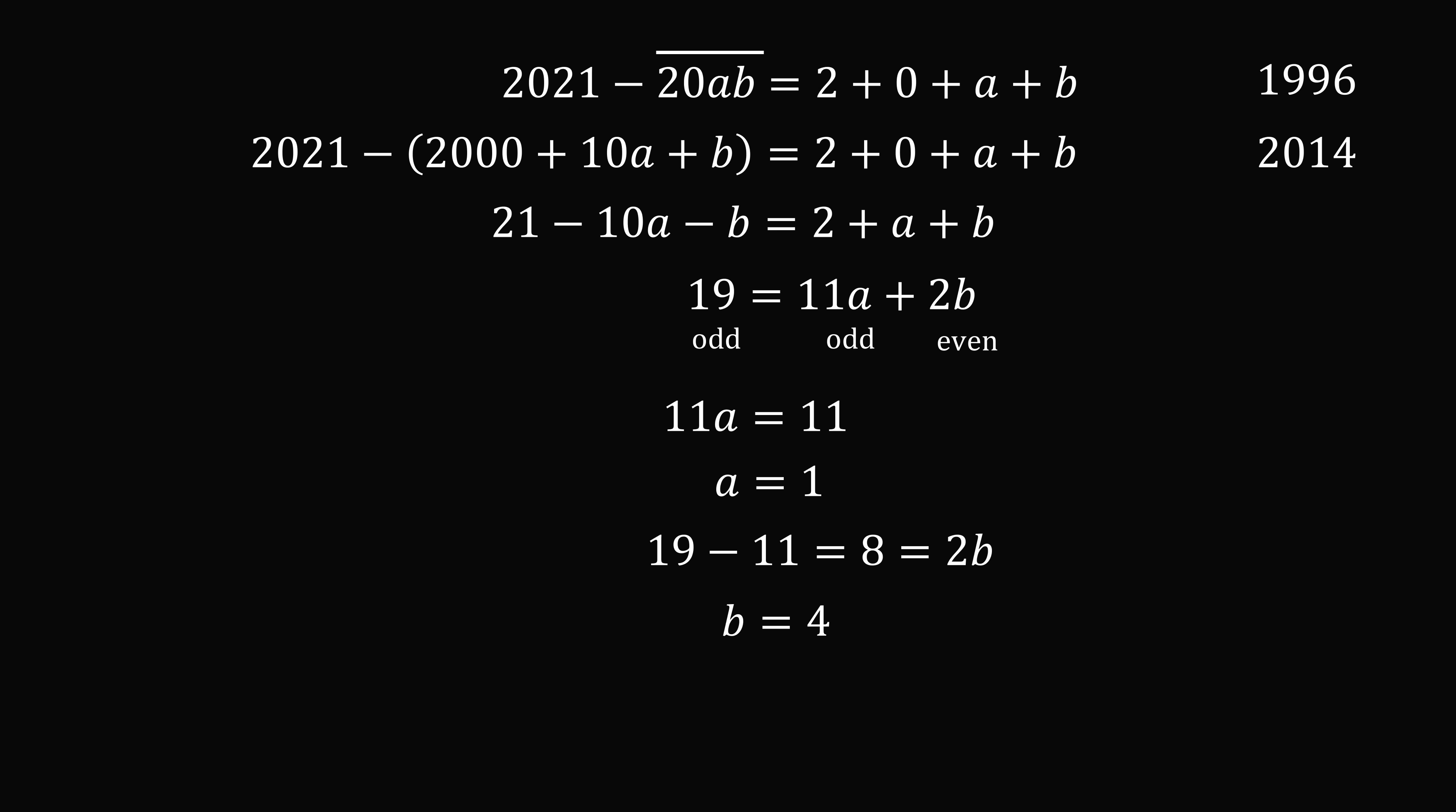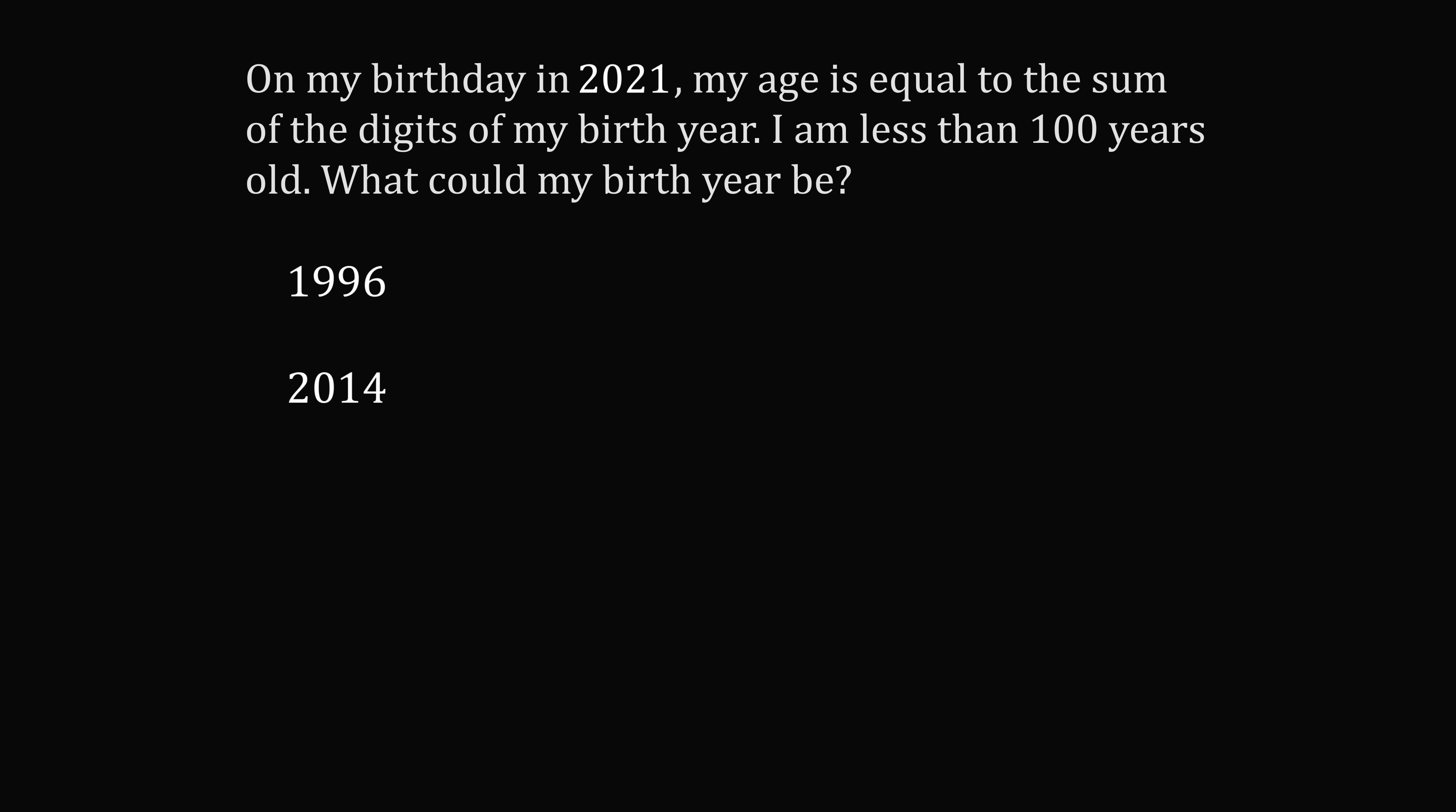So, let's just check these possibilities. If you were born in 1996, your age would be equal to 2021 minus 1996, which equals 25. And that is exactly the sum of the digits 1, 9, 9, and 6. If you were born in 2014, your age is equal to 7. And that's exactly the sum of the digits 2, 0, 1, and 4. So, you were either born in 1996 or 2014.